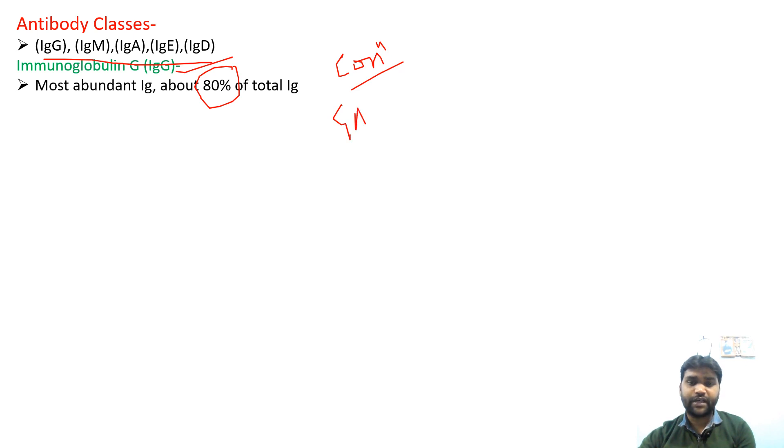For concentration, you have this formula: that is GUMDAY. G for IgG, then A, then M, then D, then E. These are your five antibodies and their formula is GUMDAY. This is in increasing order, means G is highest, then A, then M, then D, and E is lowest. So you can write this as G, A, M, D, E. This is their concentration.